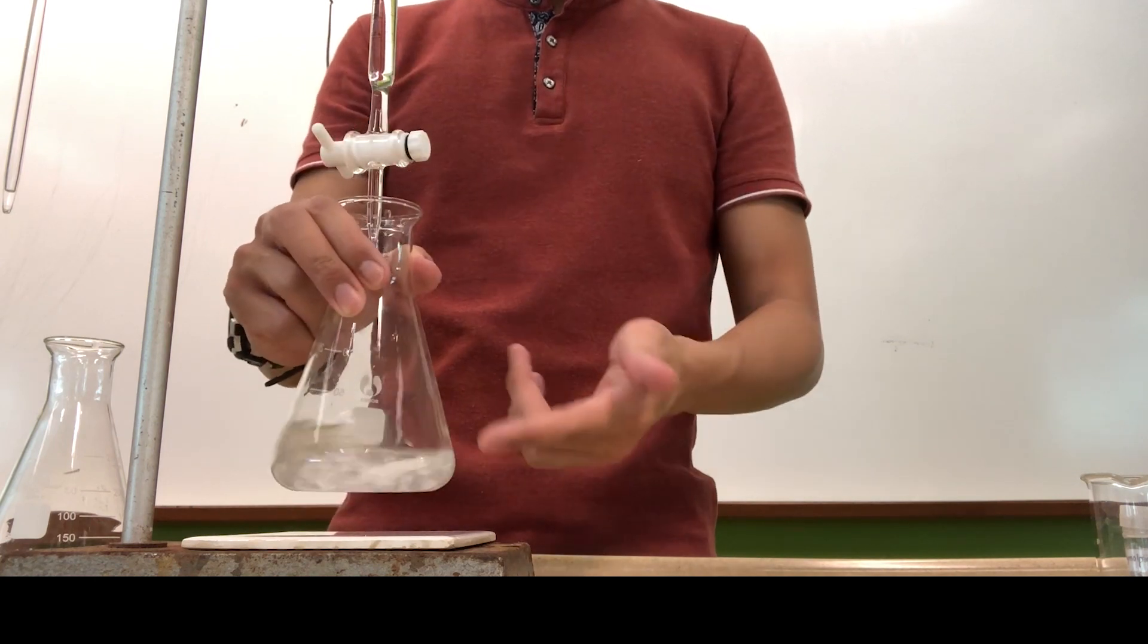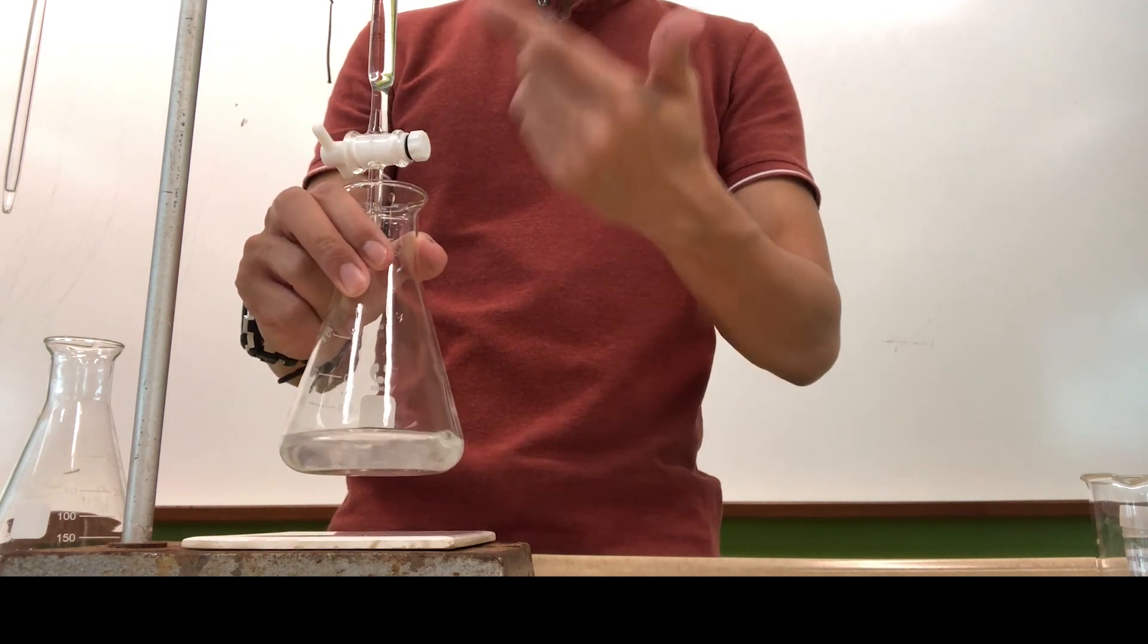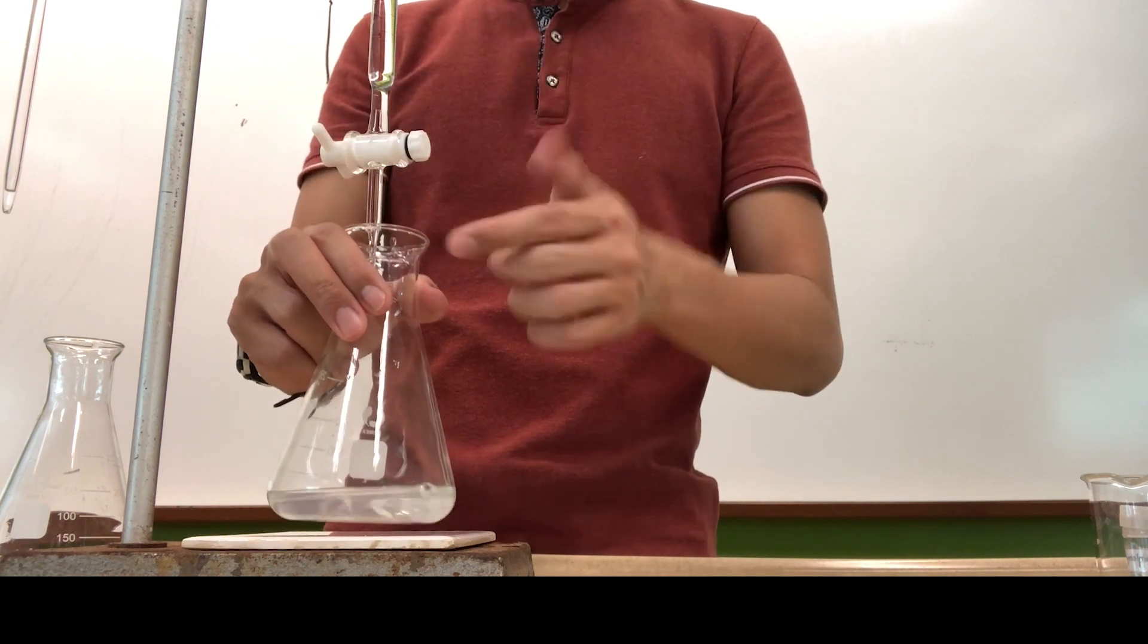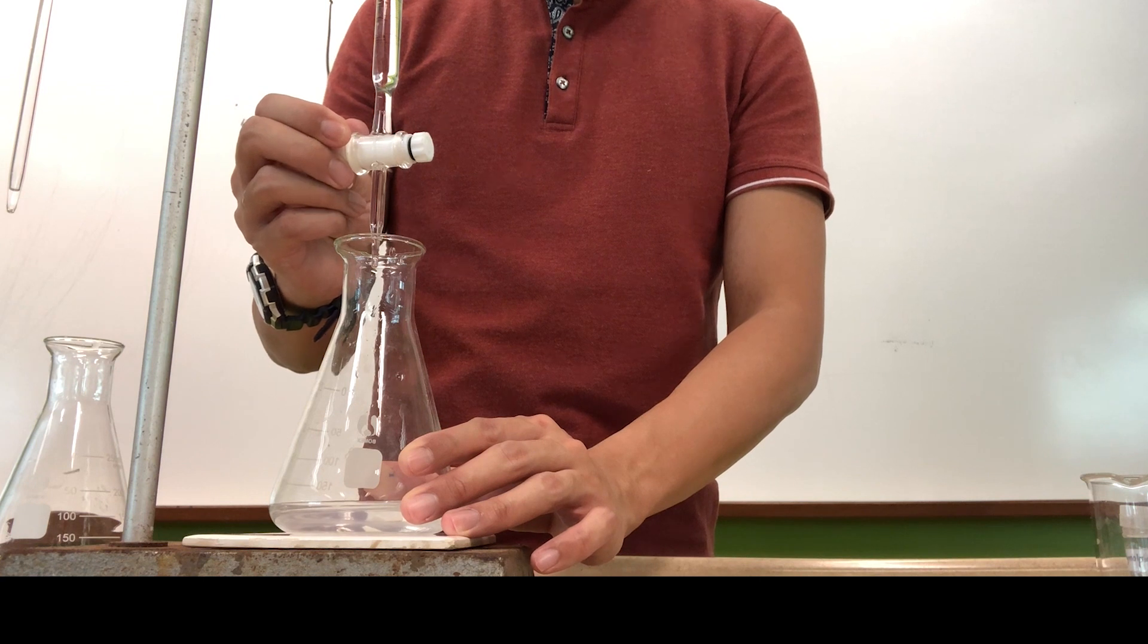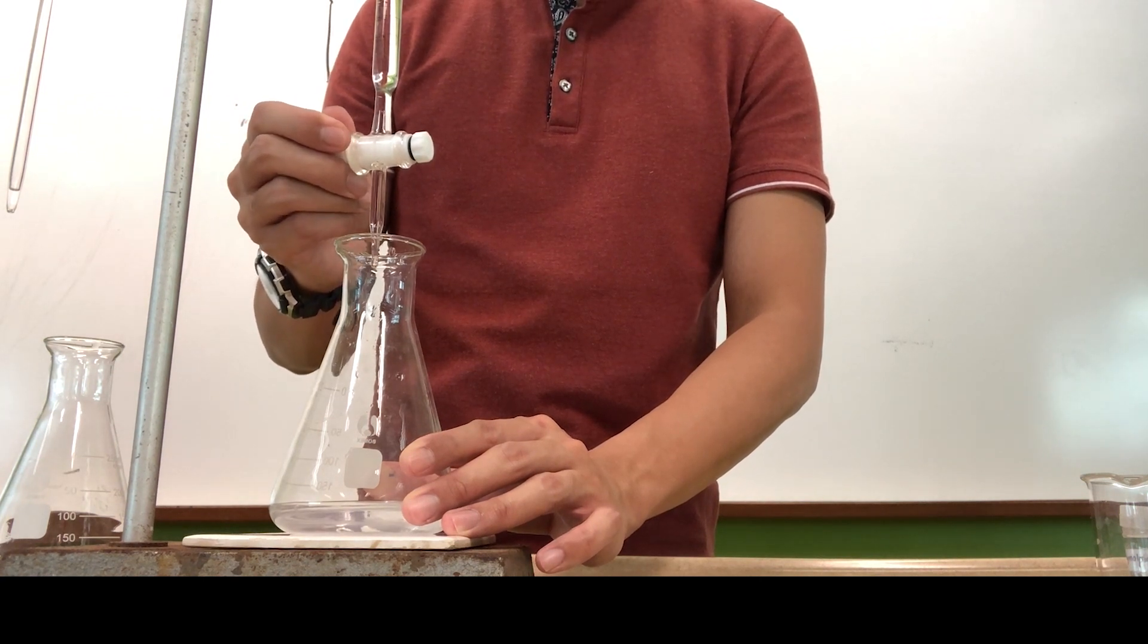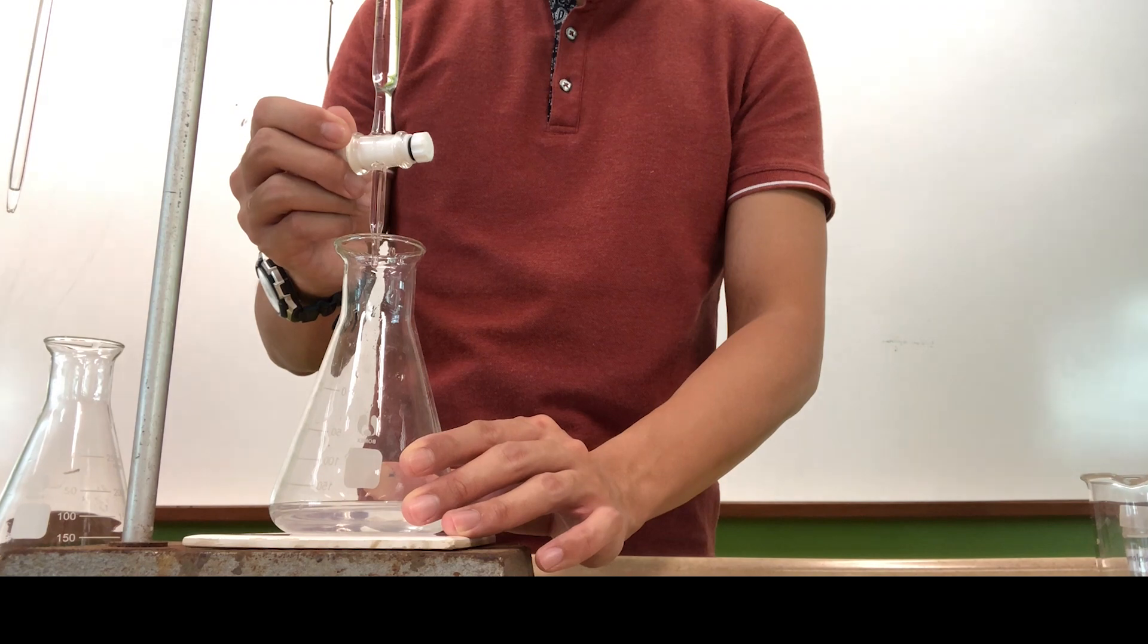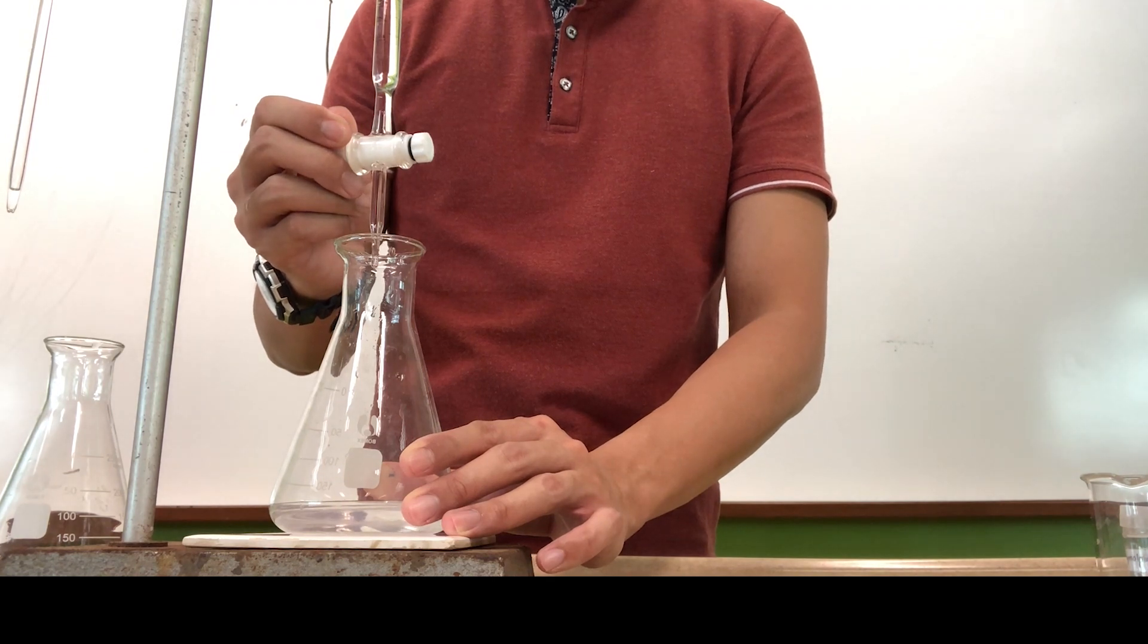Instead of dispensing all the solution at the start, what you should try to do is to actually try to figure out how to add in dropwise amounts of solution. Because at the start, you have the liberty to adjust the volume accordingly until you figure out what is the angle of the knob that can give you the dropwise addition.